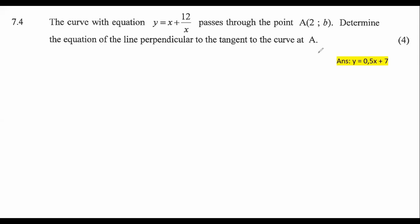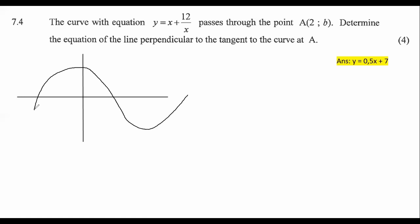Let me try to draw a picture and make it a bit easier to understand. So if we had a normal graph, let's draw a normal graph — I'm just going to make a random graph like that. And let's say this point over here is point A.